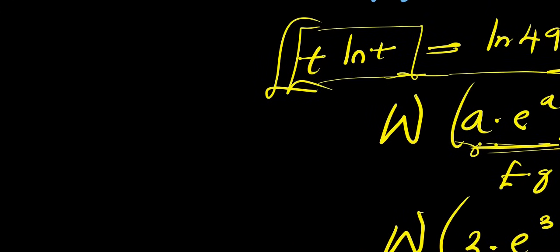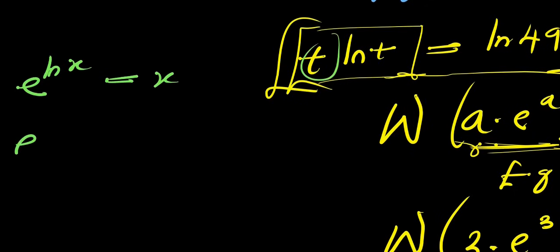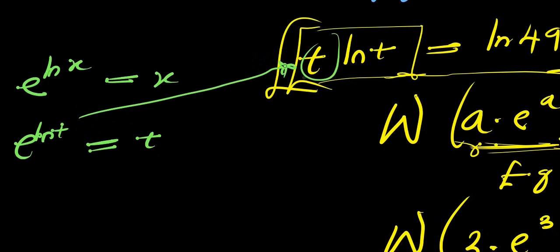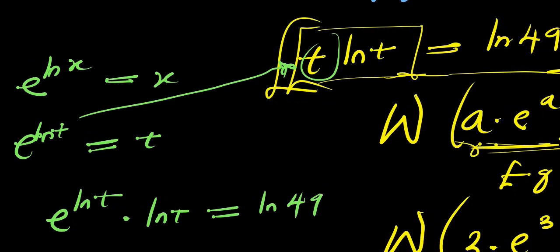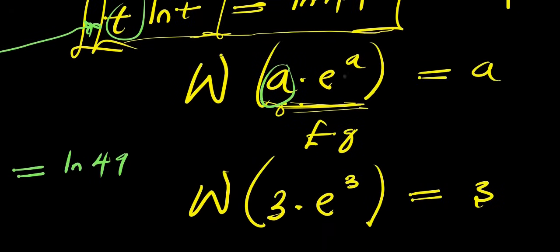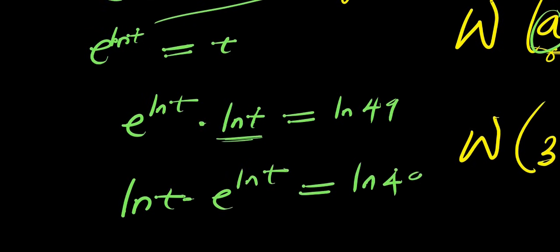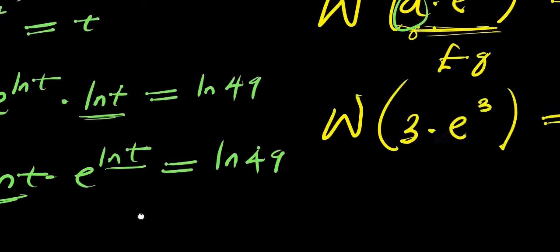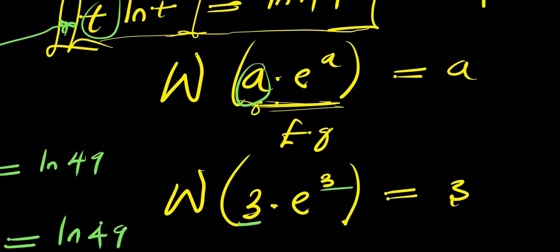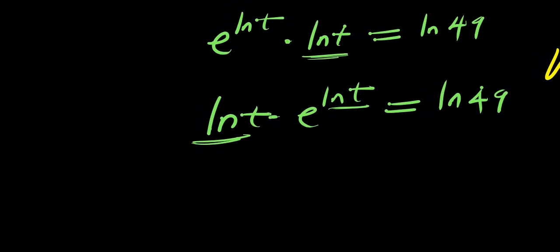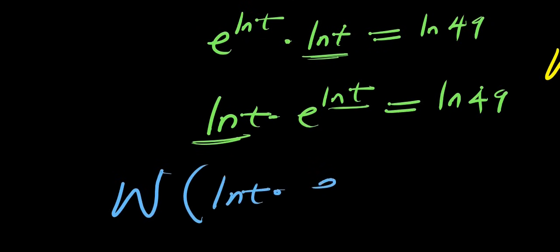To do the conversion, recall that e^(ln(x)) = x. So we can replace t with e^(ln(t)), giving us: e^(ln(t))·ln(t) = ln(49). Rearranging so ln(t) comes first: ln(t)·e^(ln(t)) = ln(49). This is now exactly the form a·e^a, where a = ln(t), so we can apply the Lambert W function.